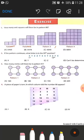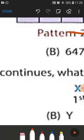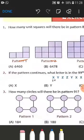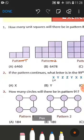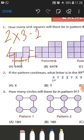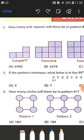In the first pattern, how many boxes are there? Four. You can see there are two rows and three columns — two multiplied by three is six, minus two will be four. Now moving further, in pattern number two...